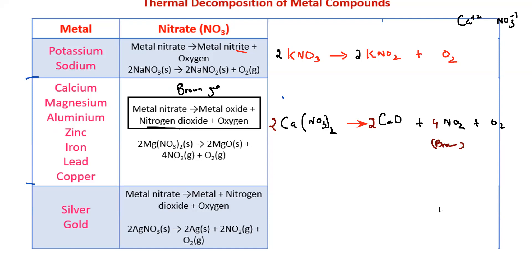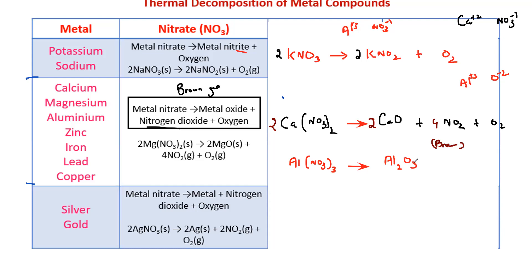For aluminium nitrate, the formula is Al(NO3)3 because aluminium is group 3 (charge +3) and nitrate is −1. When heated, aluminium nitrate decomposes into aluminium oxide Al2O3 — because aluminium is +3 and oxygen is −2 — plus nitrogen dioxide NO2, plus oxygen. The product pattern is the same; only the formula changes based on the metal's valency.